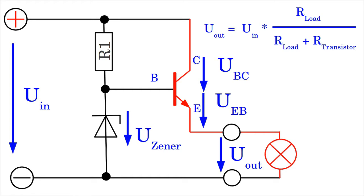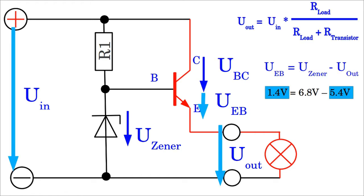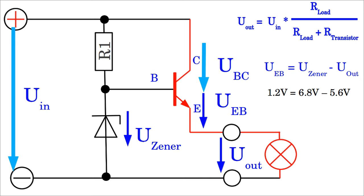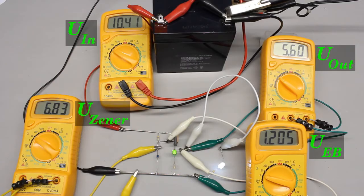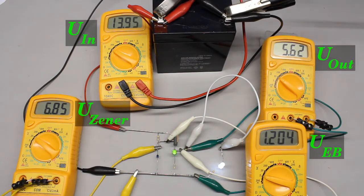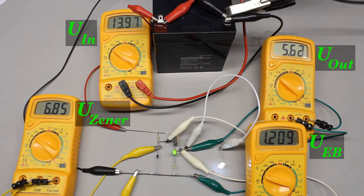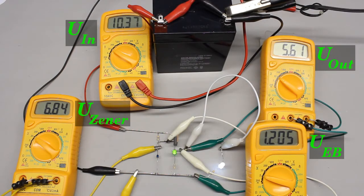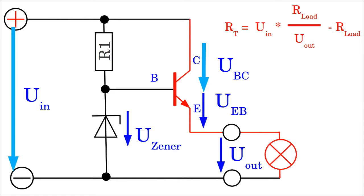An increasing input voltage would result in an increasing output voltage, but also in a decreasing emitter-base voltage and so in an increasing emitter-collector resistance. The increasing resistance of the emitter-collector line counterbalances the increasing input voltage. While the potential across base and emitter is increasing slightly, those between base and collector is increasing noticeably. Vice versa, a decreasing input voltage results in an increasing emitter-base voltage and so in a decreasing resistance of the emitter-collector line. Once more, the circuit acts contrary to the varying circumstances, regulating the output voltage to the set-point. The circuit is called a linear regulator because there is a linear correlation between the resistance of the transistor and the input voltage.